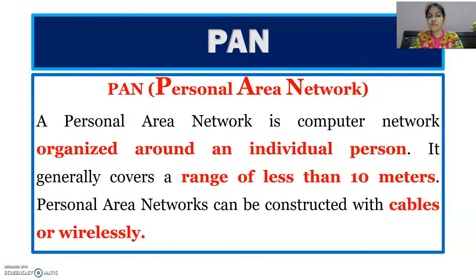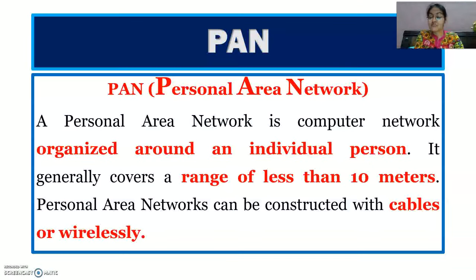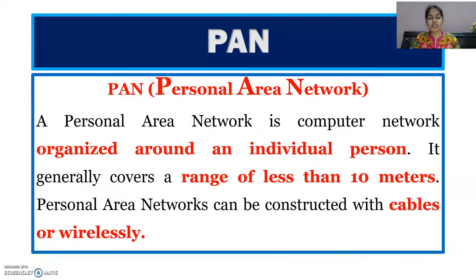First is PAN — Personal Area Network. Suppose you have to transfer data from a mobile phone to a laptop or from one computer to another. It is a very small range — a personal area network. A personal area network is a computer network organized around an individual person. It generally covers a range of less than 10 meters. For example, sharing pictures with Bluetooth — that is also an example of PAN. It can be wired or wireless.